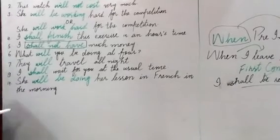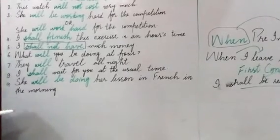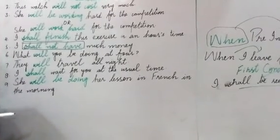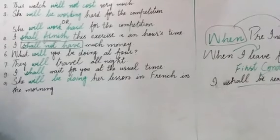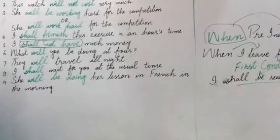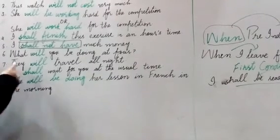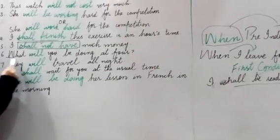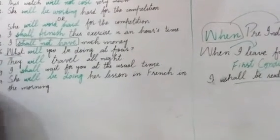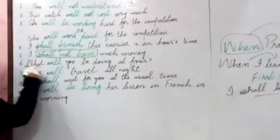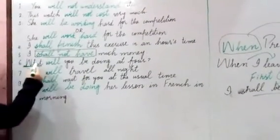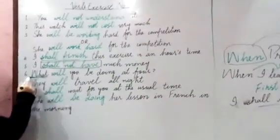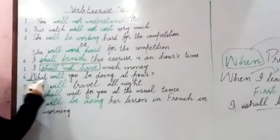The next sentence is: 'What will you be doing at this hour?' This uses future continuous tense. 'What will you be doing at this hour?' — the phrase 'at this hour' is a specific time point indicating future continuous tense.